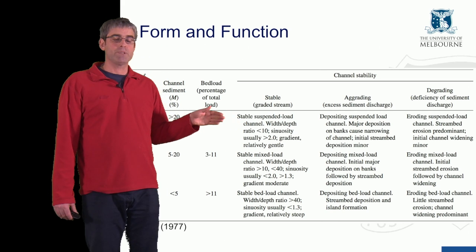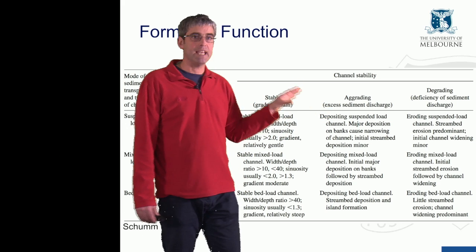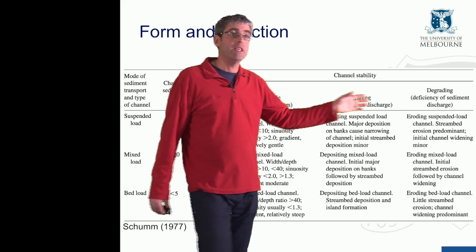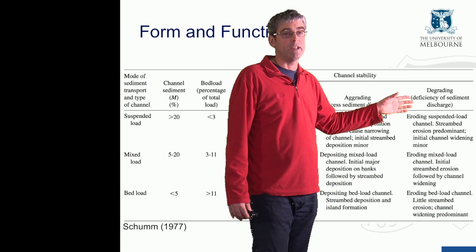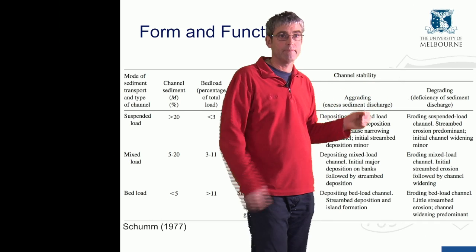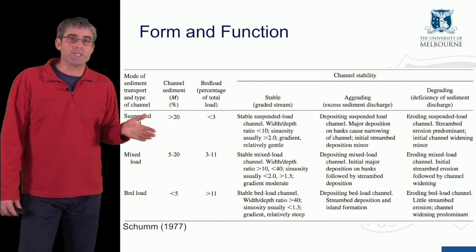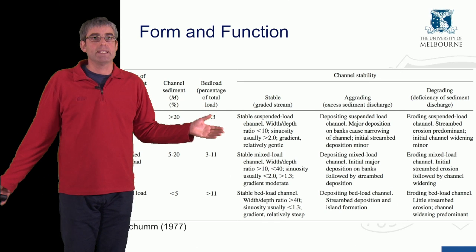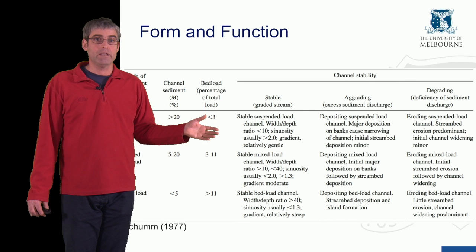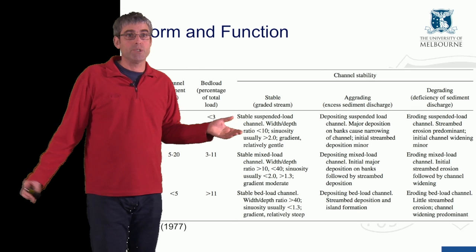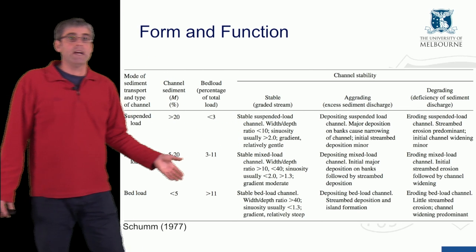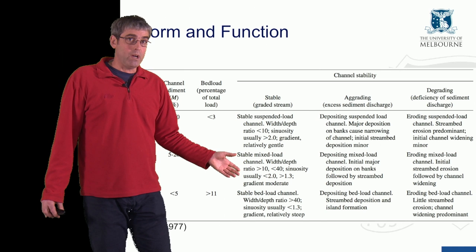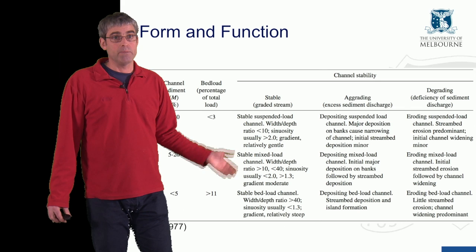There's a further division in stream types between a stable stream, an aggrading stream — where there's excess sediment being deposited within the reach and the channel cross-section is contracting — and a degrading case, where erosion is occurring along the river reach and the cross-section is enlarging. For a stable suspended load stream, width-to-depth ratios are typically less than 10, sinuosity is greater than 2, and gradients are relatively gentle. In the bed load case, width-to-depth ratio can be greater than 40, sinuosities are quite low (less than 1.3), so relatively straight channels, and they are relatively steep compared to the suspended load case.